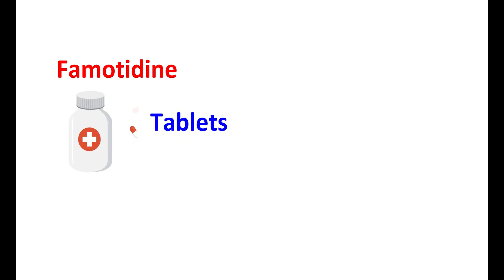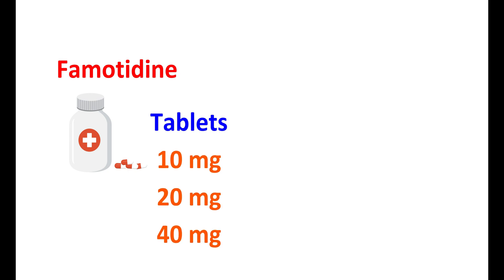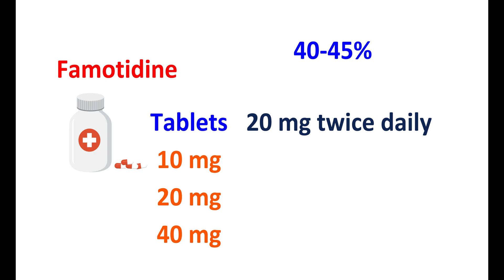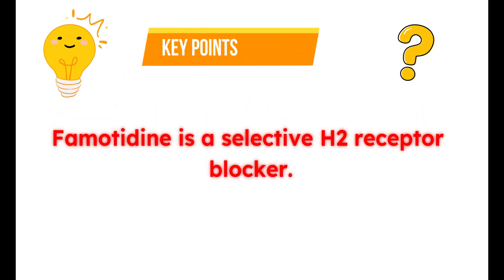Now let us discuss the doses of this medication. Famotidine is available as a tablet over the counter at three strengths: 10 mg, 20 mg, and 40 mg. It is also available as an oral suspension at 40 mg per 5 mL. For treating duodenal and gastric ulcers, it can be started at 20 mg twice daily or as a single dose of 40 mg at bedtime for eight weeks. Famotidine has moderate bioavailability of around 40–45%, with a low bioavailability due to high first-pass metabolism. Its onset of action is less than one hour by oral route, with a half-life of 2.5 to 4 hours — extended to up to 20 hours in severe renal impairment.